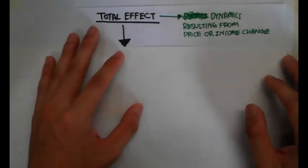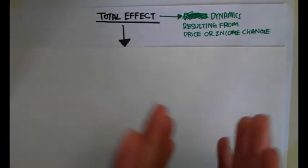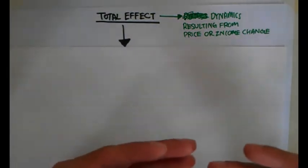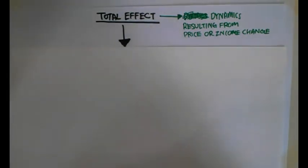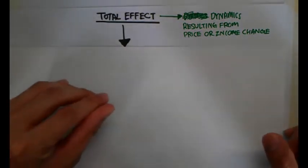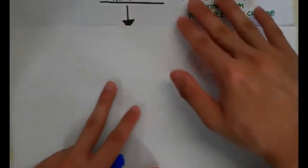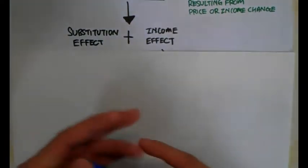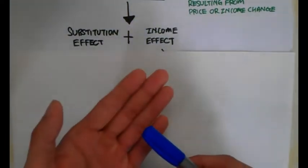Let's talk about the combination of both effects which will give you the total effect. The total effect is the dynamics resulting from a price change or an income change in a world where you have two goods. The total effect is broken down into the substitution effect and the income effect.